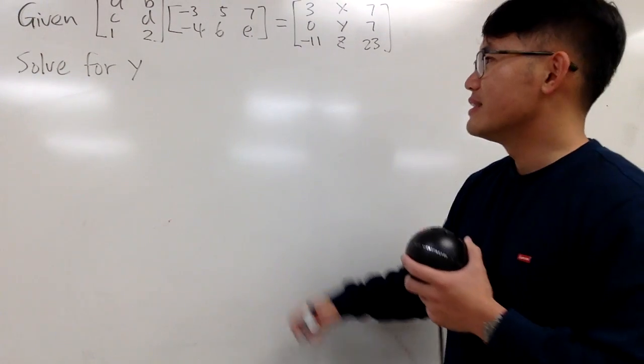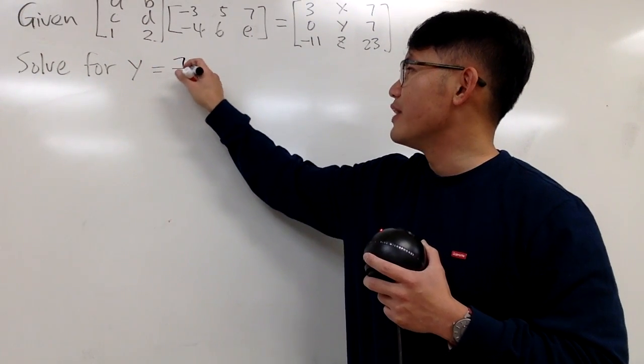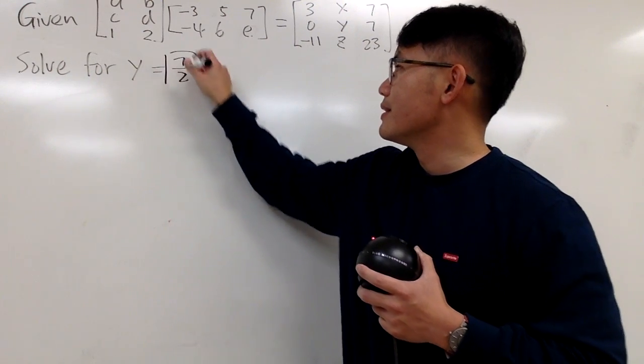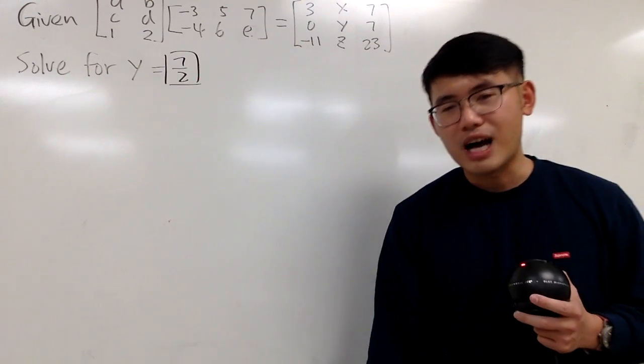Okay, here is the answer. Let me tell you guys that Y is equal to 7 over 2. Right? And of course, I'll show you guys how to do this.